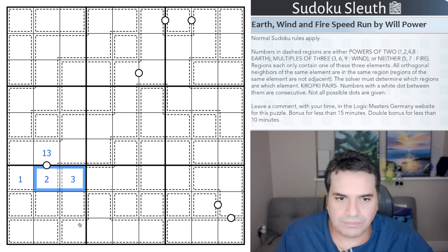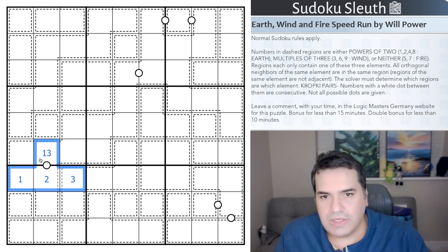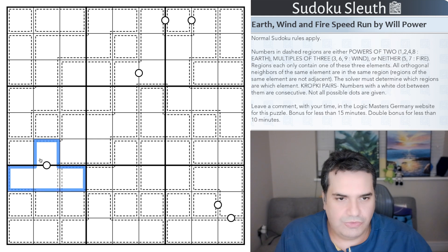You're looking at all of these killer cages. They're called regions in today's puzzle. We're going to have to figure out what region is what. Each region is composed of only one set of numbers. Earth can only be made up of powers of two: one, two, four, and eight. Wind can only be made up of multiples of three: three, six, and nine.